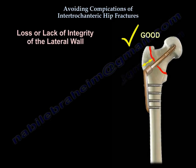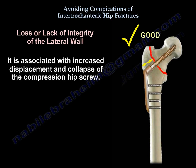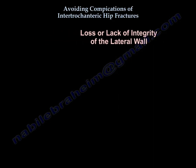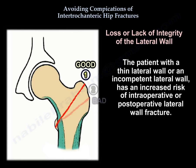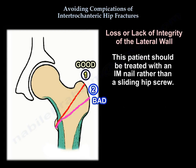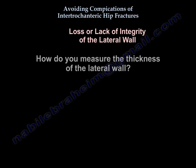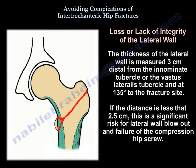Loss or lack of integrity of the lateral wall is associated with increased displacement and collapse of the compression hip screw. A patient with a thin or incompetent lateral wall has an increased risk of intraoperative or postoperative lateral wall fracture and should be treated with an IM nail rather than a sliding hip screw. The wall thickness is measured 3 cm distal from the vastus lateralis tubercle at 135 degrees to the fracture site. If the distance is less than 2.5 cm, there is a significant risk for lateral wall blowout and failure of the compression hip screw.